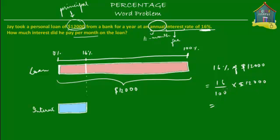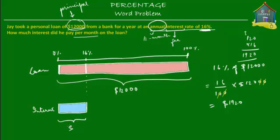That's equal to — the two zeros get cancelled out, this 0 and this 0 and this 0 and this 0 — and what we have is 16 times 120. So 120 times 16: 16 times 0 is 0, 16 times 2 is 32, and 16 times 1 is 16, plus 3 is 19. So this is equal to 1,920. The annual interest for 12 months is equal to $1,920.